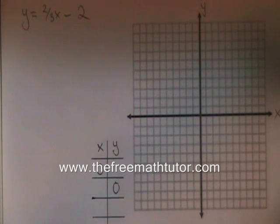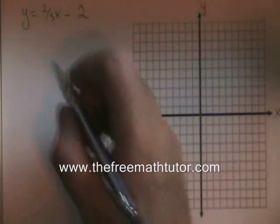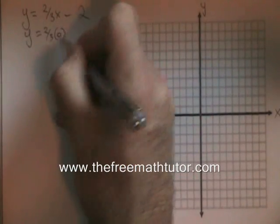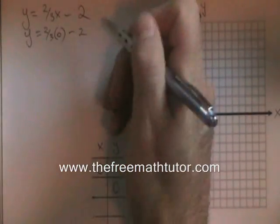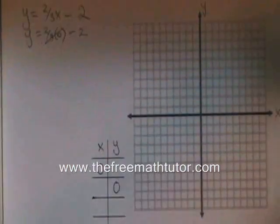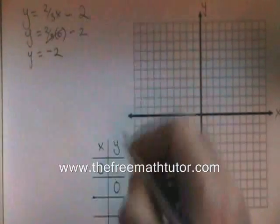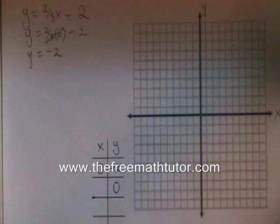Our equation is y equals two-thirds x minus two. If x equals zero, y equals two-thirds times zero minus two. The two-thirds times zero cancels, and you have y equals negative two. We have found our first intercept.